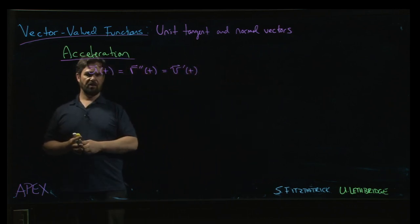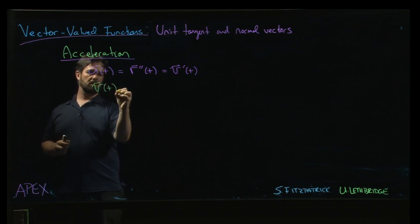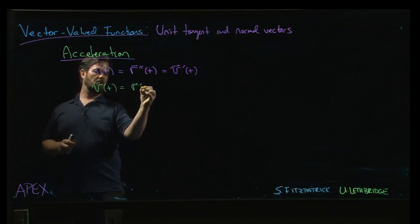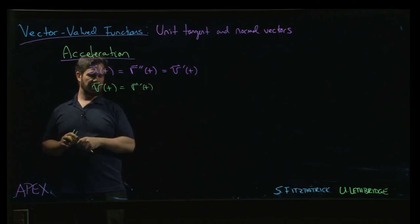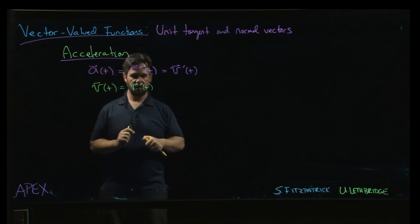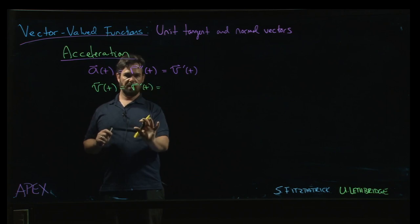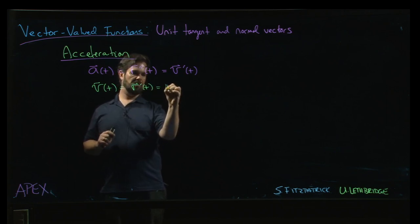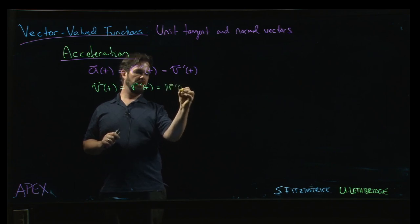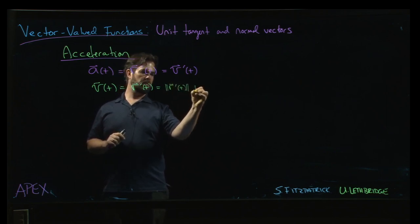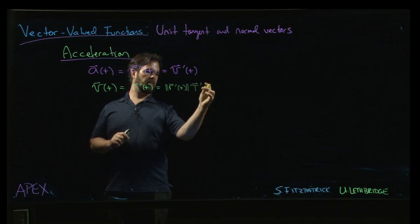And so here's the catch. Velocity is r prime of t. Now, let's express that in terms of the unit tangent. So the unit tangent is r prime divided by the magnitude. Turning that around, r prime is the magnitude of r prime of t times the unit tangent vector.